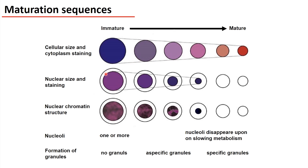Very similarly, the nuclear size and the staining of the nuclear structure are going to be changed. In an early blast stage, the nucleus is huge and large, almost occupying the full cell, and we do have only a very narrow cytoplasm surrounding the nucleus. When maturation and division go on, the nucleus is getting smaller. As the specific protein accumulates, the cytoplasm takes a bigger proportion of the cell.